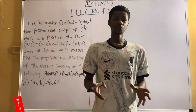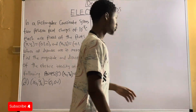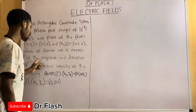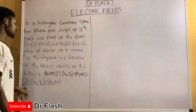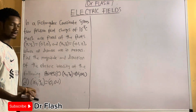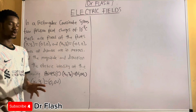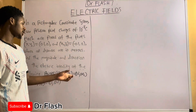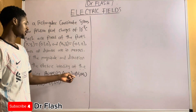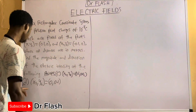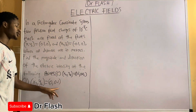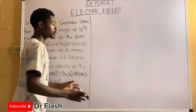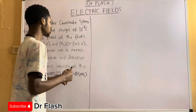In this video, still in electric fields, we're going to be solving case two of the problem we attempted earlier. There is a part c and a part d in this case — we solved a and b in our previous video, and those were quite easy. The coordinates given in this case are 0.1, 0.15, 0, and 0.1.